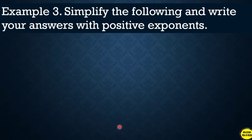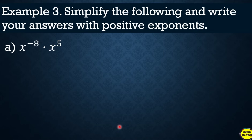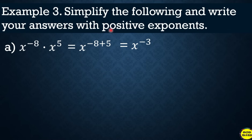Now let's simplify the following and write the answers with positive exponents. First: x raised to negative 8 times x raised to 5. Applying the product rule, copy the base and add the exponents: negative 8 plus 5 equals negative 3. Since we need a positive exponent, we take the reciprocal: the answer is 1 over x cubed.